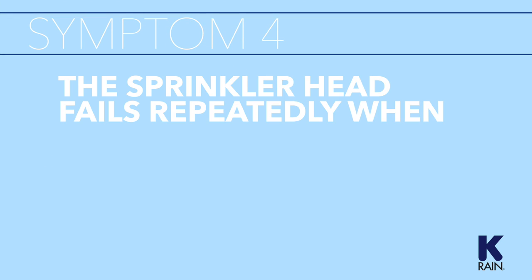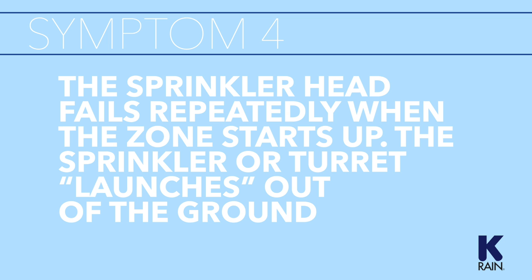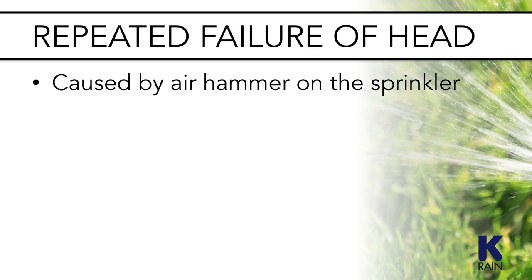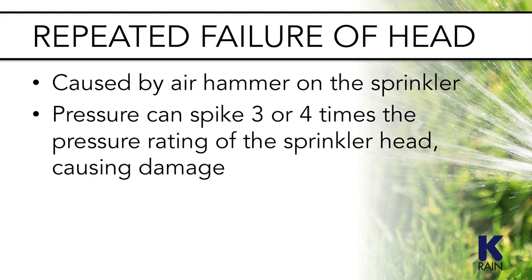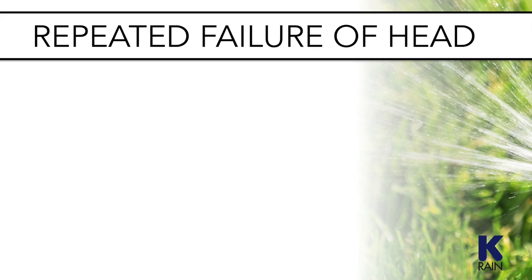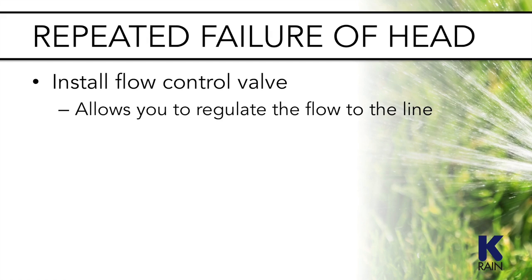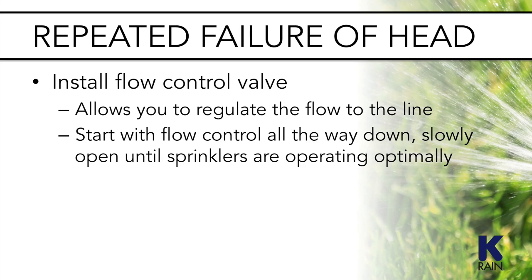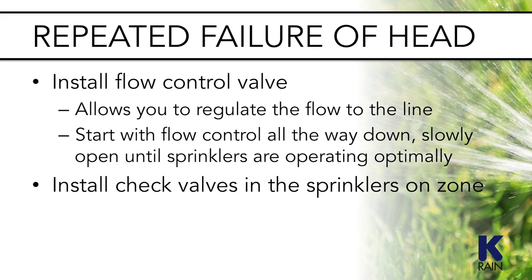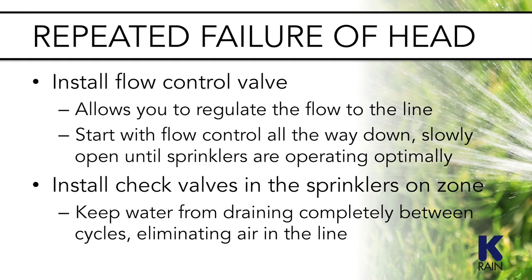Symptom 4: The sprinkler head fails repeatedly when the zone starts up — the sprinkler or turret launches out of the ground. This kind of failure is caused by an air hammer on the sprinkler, created as water rushes into the lines. Pressure can spike three or four times the pressure rating of the sprinkler head. There are two things you can do: first, install a flow control valve to regulate the flow to the line — low enough to prevent air hammer but not so low as to impede sprinkler performance. Start with the flow control cranked all the way down and slowly open it until the sprinklers are operating optimally. Second, install check valves in the sprinklers on the zone to keep the line from draining completely between cycles, eliminating the air that causes the air hammer and pressure buildup.